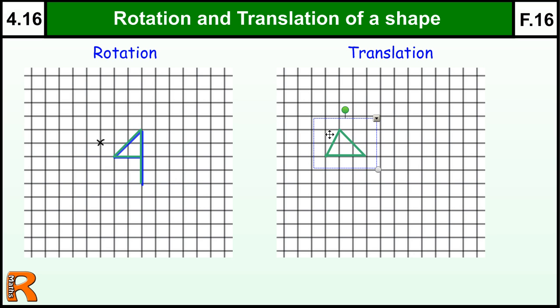So translating a shape is all about moving it, sliding it sideways. So if I take that triangle and move it one square to the right, that's a translation of one to the right. If I take that triangle and move it one square up, that's a translation of one up, or one down, or one to the left.